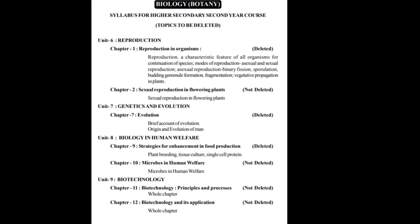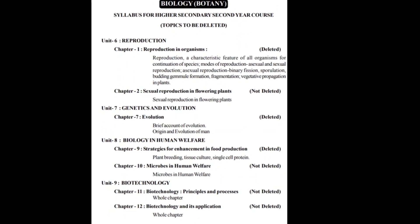Unit 7 has Genetics and Evolution, and in the botany part you have the Evolution chapter — Chapter 7. In this chapter, two topics are deleted: 'A Brief Account of Evolution' and 'Origin and Evolution of Man.' Only these two topics are deleted, so you have to study the rest of the topics from this chapter.